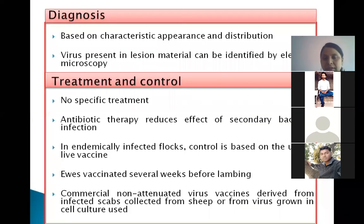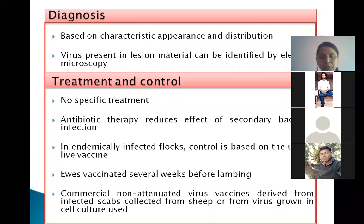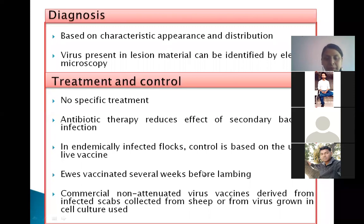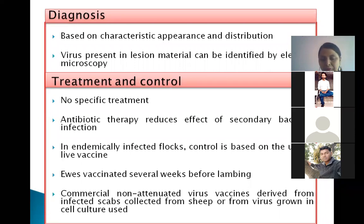Diagnosis is based on the characteristic appearance and distribution of lesions, and the virus can be isolated and identified by electron microscopy from the lesions. There is no specific treatment, but antibiotics can reduce the effect of secondary bacterial infections. In endemic areas where flocks are affected, control is done using live vaccines, and ewes are generally vaccinated before lambing. Non-attenuated commercial virus vaccines are available, obtained from infected scabs or from virus grown in cell culture.